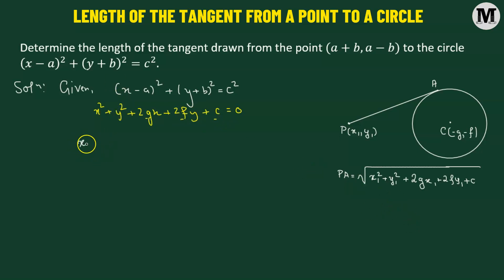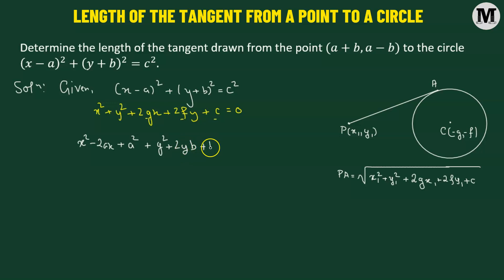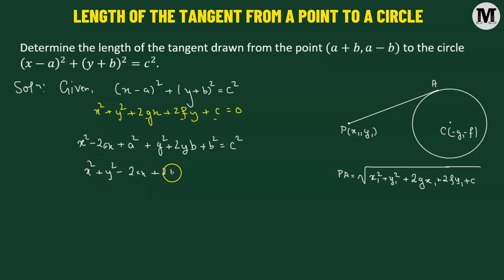Expanding x minus a whole squared gives x squared minus 2ax plus a squared. Adding y plus b whole squared gives y squared plus 2yb plus b squared, and this equals c squared. Rearranging, we get x squared plus y squared minus 2ax plus 2by plus a squared plus b squared minus c squared equals zero.